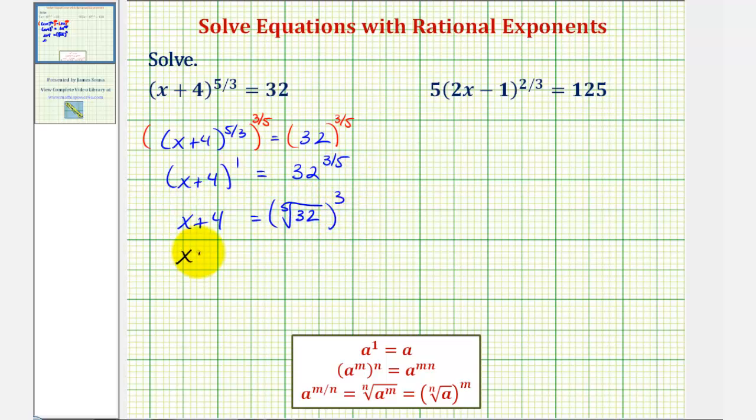So we have the quantity x plus 4 equals the fifth root of 32, which is equal to 2, since 2 to the fifth equals 32. And 2 to the third is equal to 8, giving us x plus 4 equals 8. Subtracting 4 on both sides, we have x equals 4.